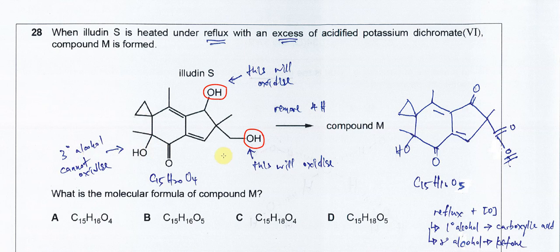You need to understand that because it's refluxed, the primary alcohol will at the end form a carboxylic acid. So the end product: this one will form a ketone, and this one first forms an aldehyde, then is further oxidized to form the carboxylic acid.